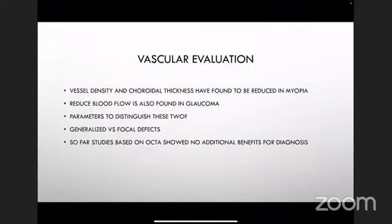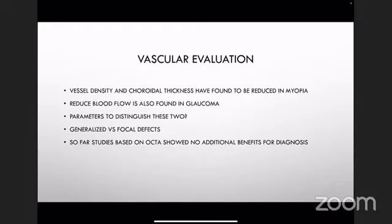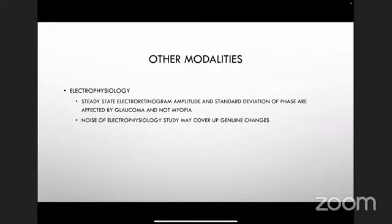Another area of interest is vascular evaluation — vessel density and choroidal thickness have been found to be reduced in myopia, and reduced blood flow is also found in glaucoma. So are there parameters to distinguish the two? Myopia tends to cause a relatively generalized effect versus the focal defect seen in glaucoma, but so far the most hopeful OCT-A studies show no additional diagnostic benefit. Other modalities like electrophysiology may offer potential, but they are very difficult to perform on these patients.